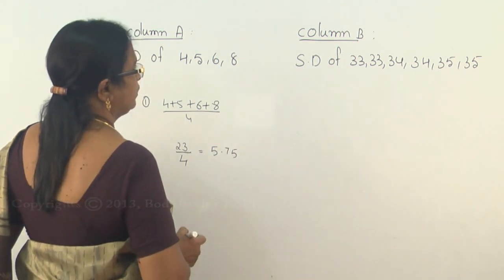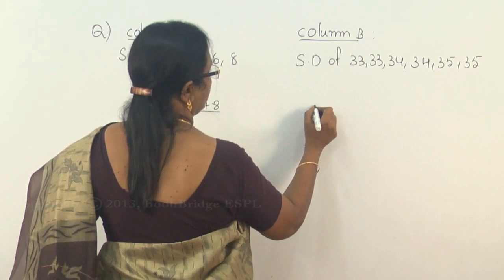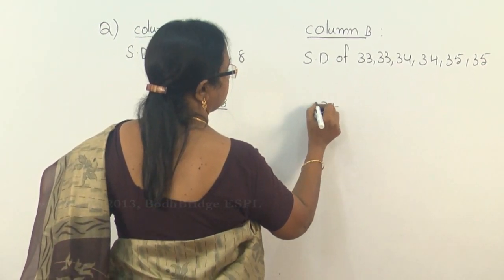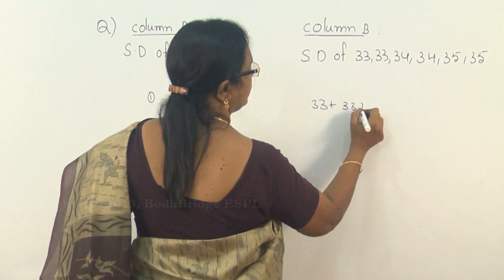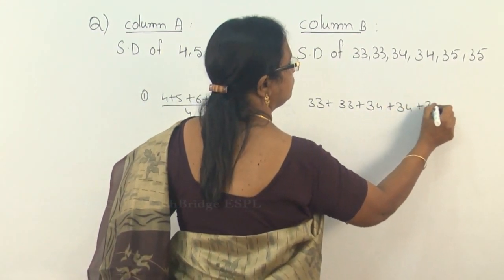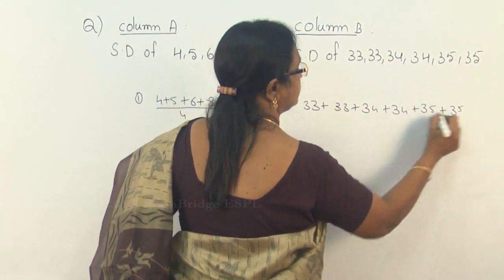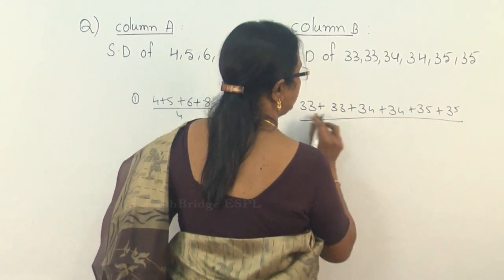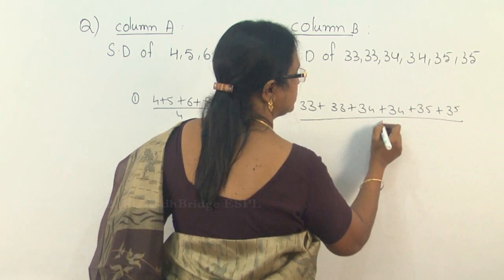And now here, the average is 33 plus 33 plus 34 plus 34 plus 35 plus 35, whole divided by 1, 2, 3, 4, 5, 6, so 6 data.